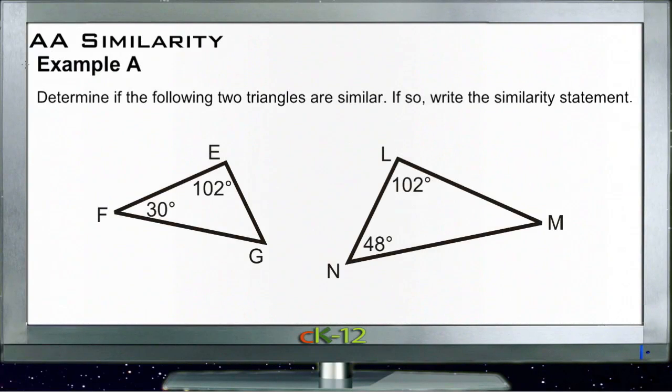Here are the example questions for AA similarity. Remember that AA stands for angle-angle, and the AA similarity property tells us that if two triangles have at least two congruent angles, then the triangles themselves are similar. We don't necessarily need to measure the third angle.